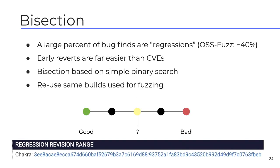In our experience, a large chunk of bugs we find — around 40% — are actually regressions, meaning most are bugs recently introduced into the code base. This is why continuous fuzzing is very important. To help with triage, we perform a bisect or binary search to figure out which commit caused the bug, reusing the exact same builds used for fuzzing. The more frequent the builds, the more precise the bisection range. With Chrome, we build every single revision, so our bisects can often point to the exact commit that caused the regression, allowing us to revert earlier and prevent buggy code from reaching production.